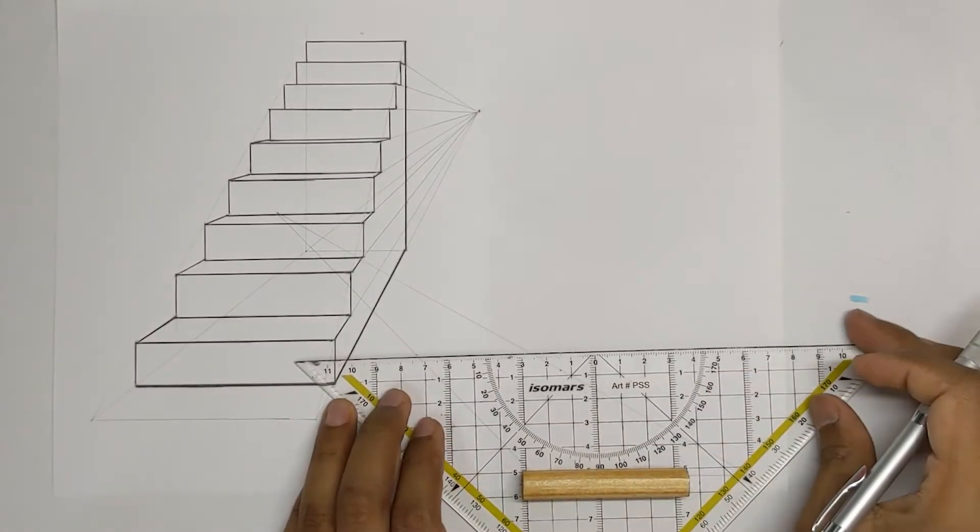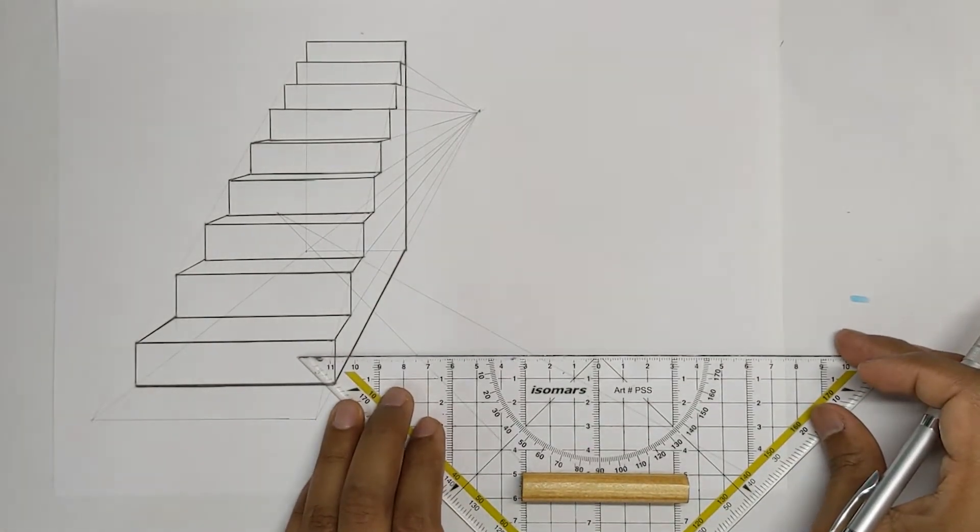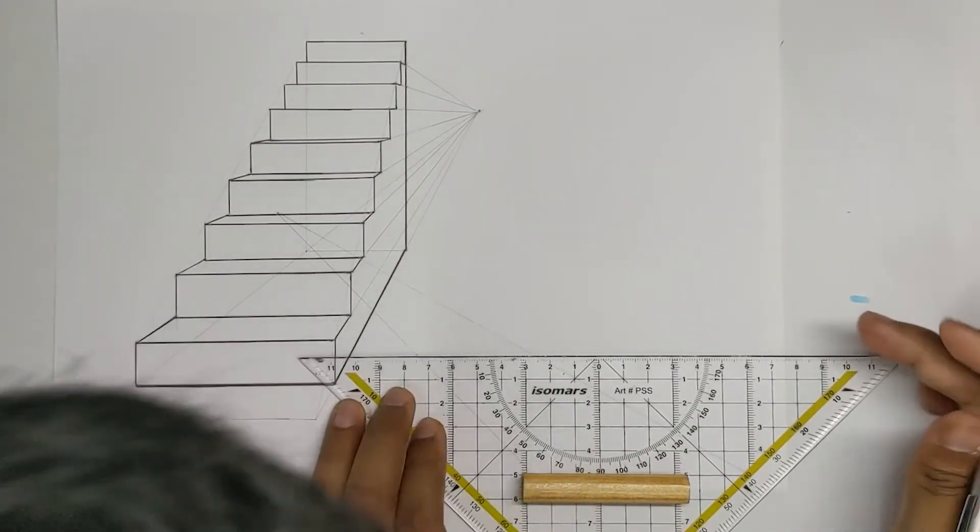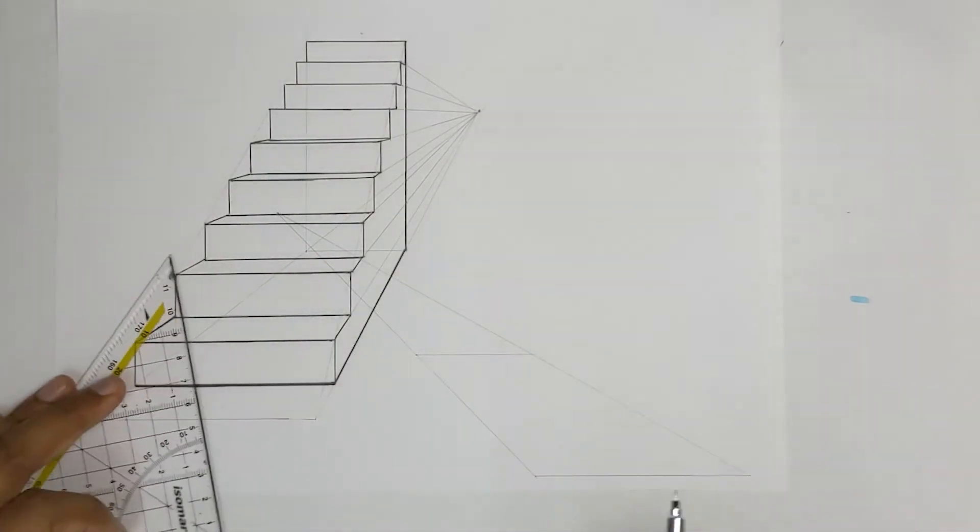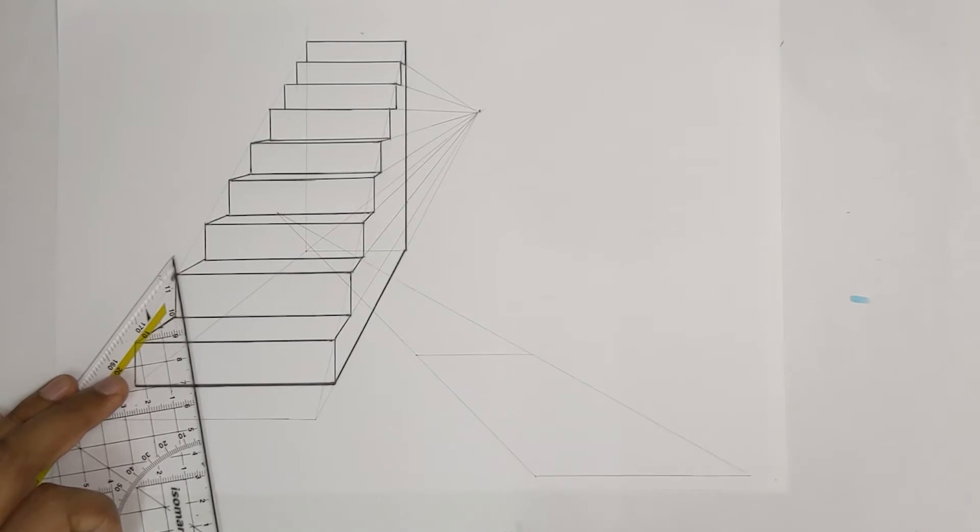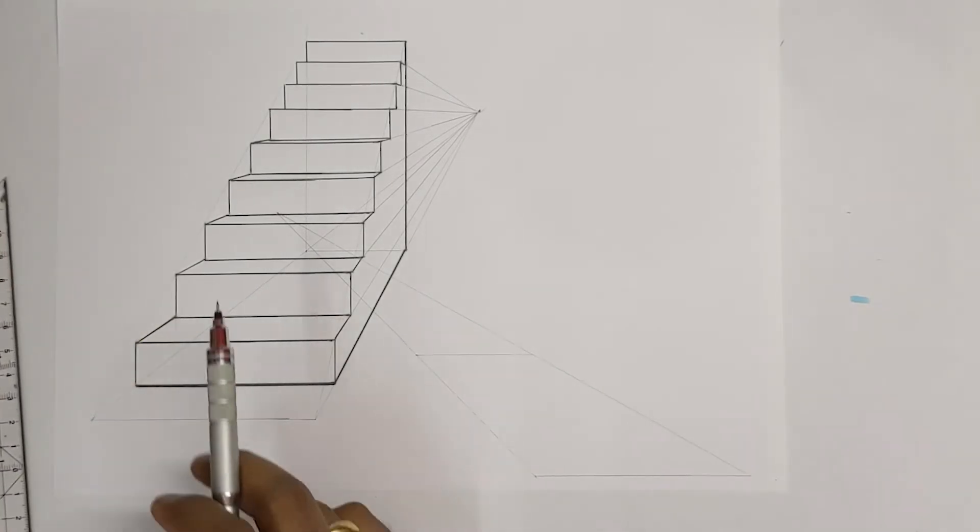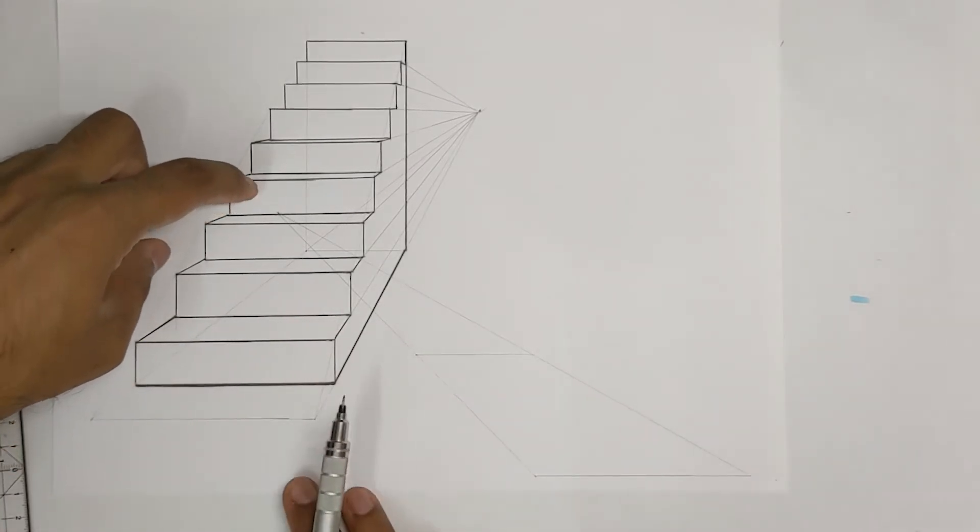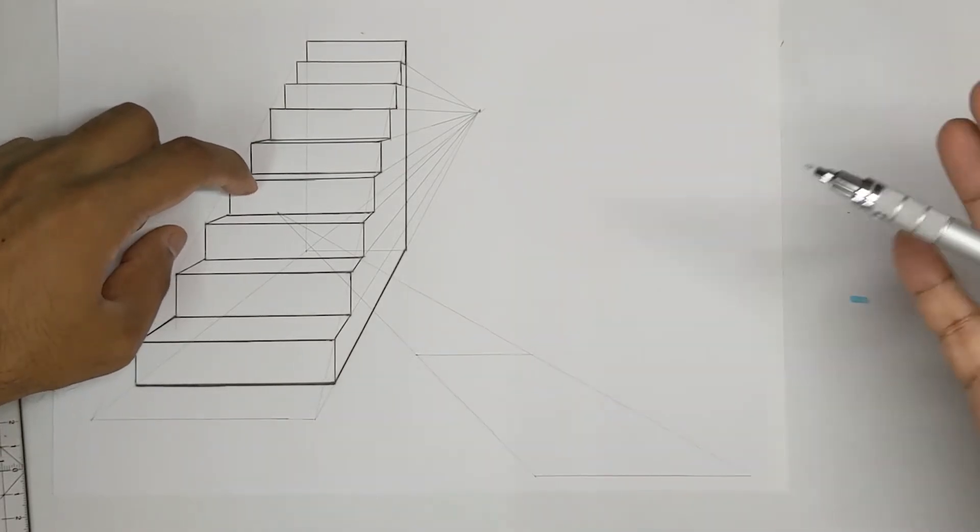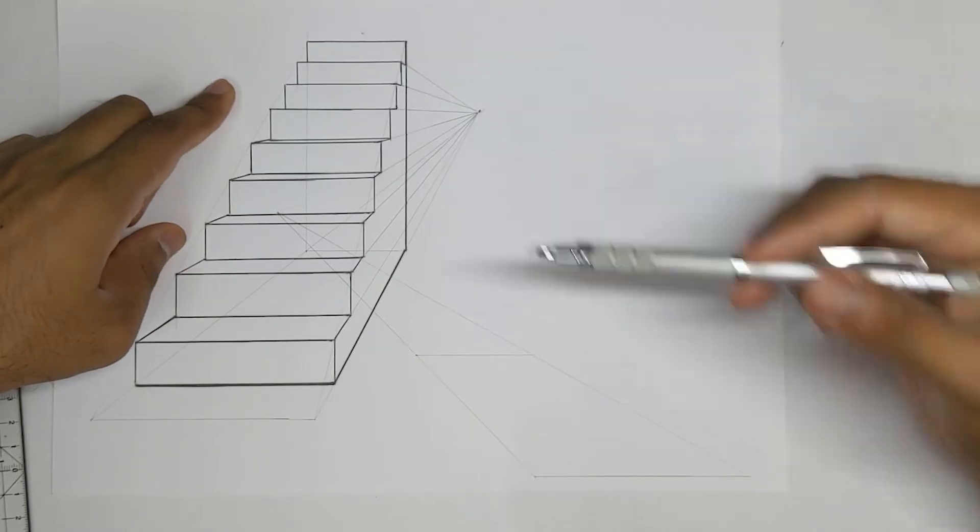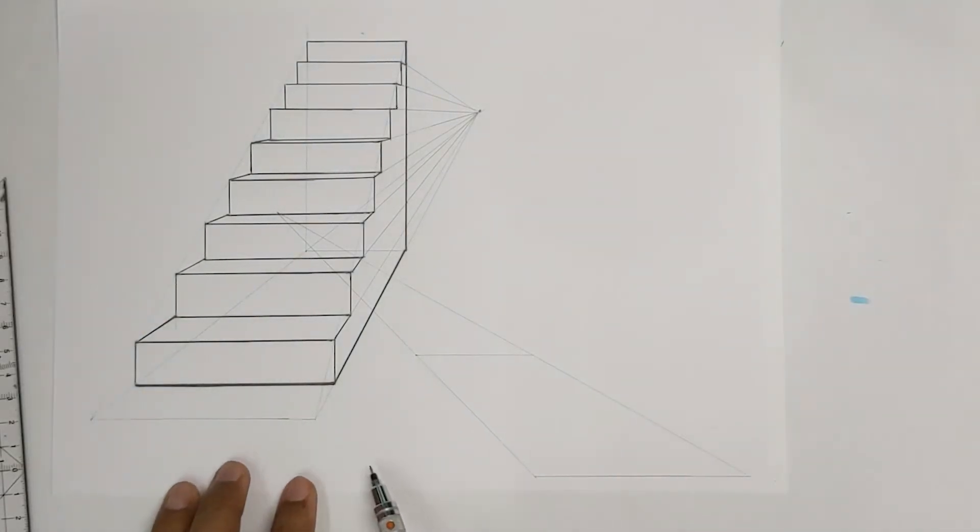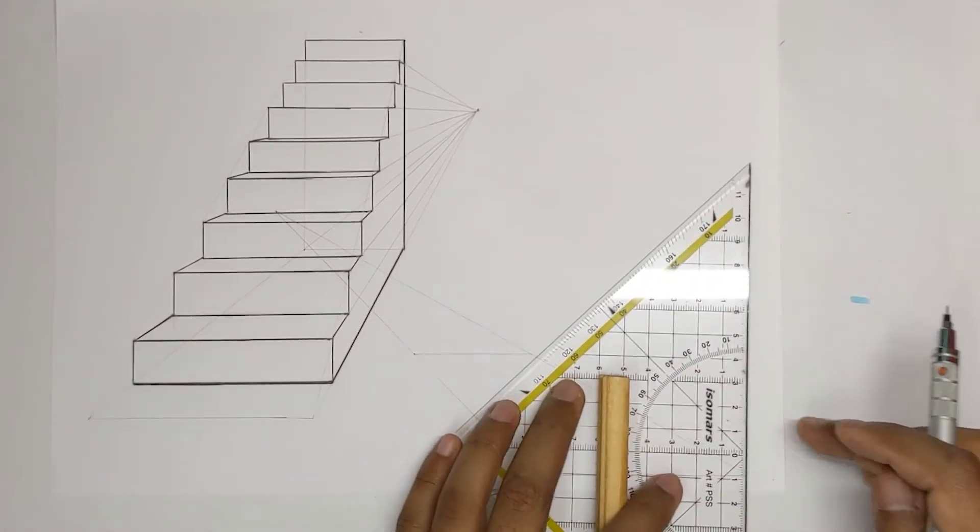From that point draw a horizontal line. Okay so now we have our ground plane here and as we did for this example we have to define the back wall which is essentially this wall for this example as well. So as you are approaching the stairs from this side you are going to have a back wall over here.